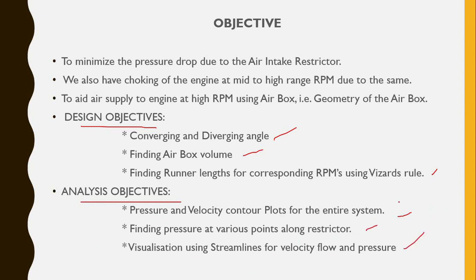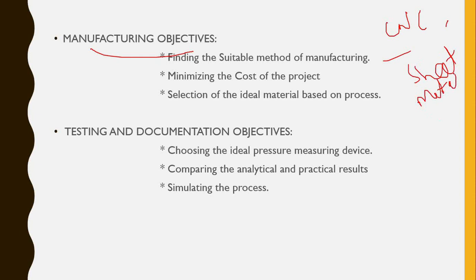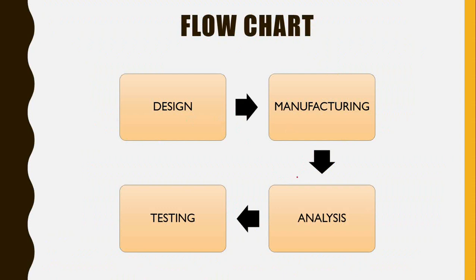Analysis objectives also include visualization of flow streamlines — pressure flow and velocity. Manufacturing objectives include finding a suitable method of manufacturing such as CNC or sheet metal, minimizing the cost of the project, selecting the ideal material based on process testing, documenting the methods, choosing the ideal pressure measuring device, and comparing analytical and practical results. The process methodology is: design, manufacturing, analysis, and then testing.